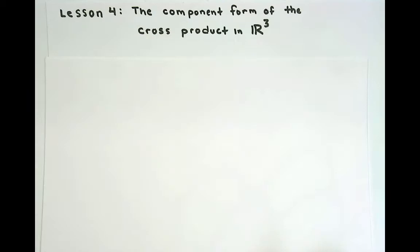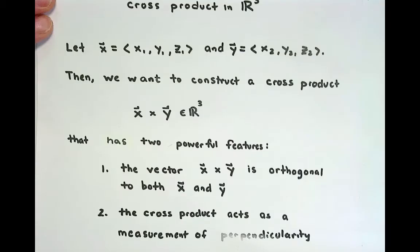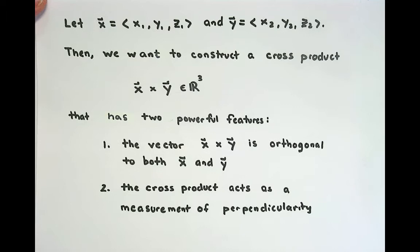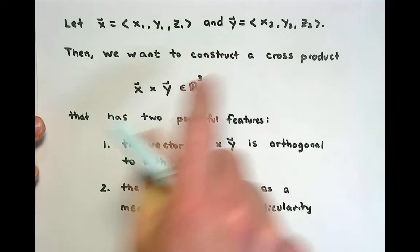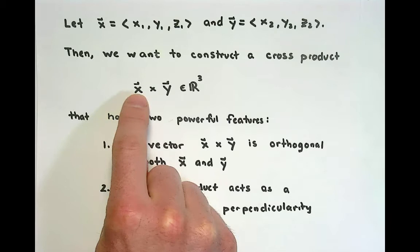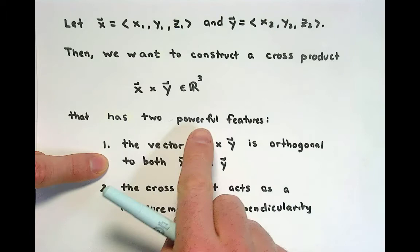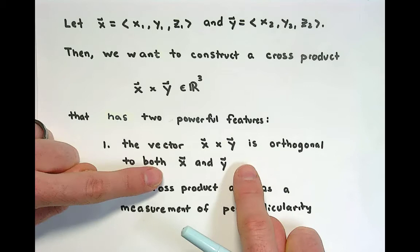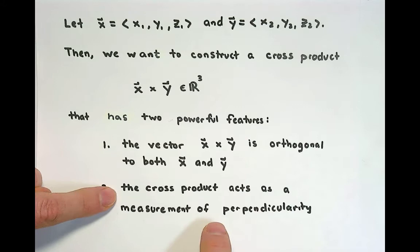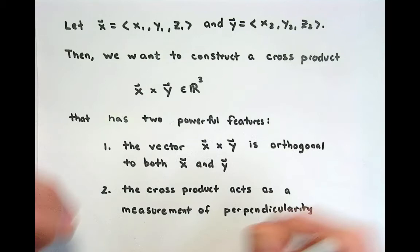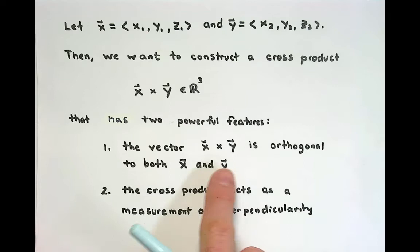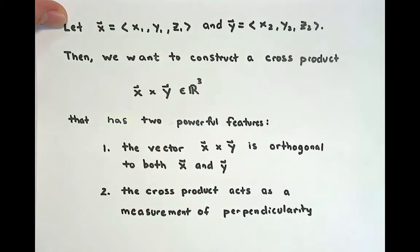Welcome back. In this video we're going to introduce the formal definition of the component form of the cross product. To introduce the cross product in R3, we wanted to start with two vectors x and y and construct a third vector called x cross y. We wanted two powerful features: first, that x cross y be orthogonal to both x and y in R3; second, that the cross product act as a measurement of perpendicularity.